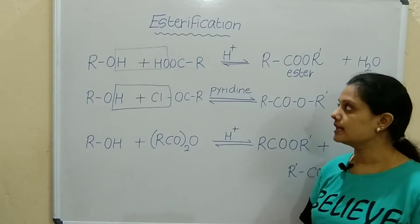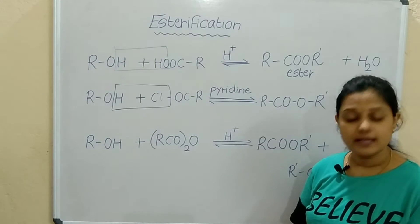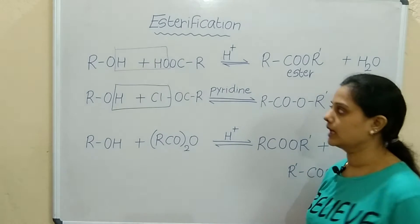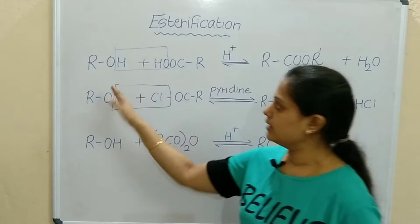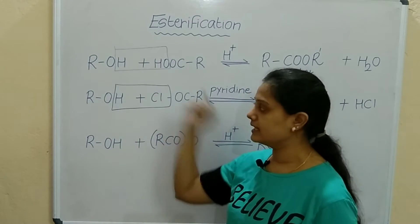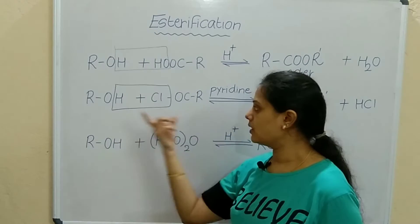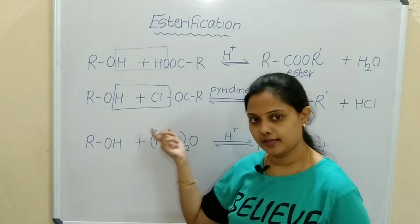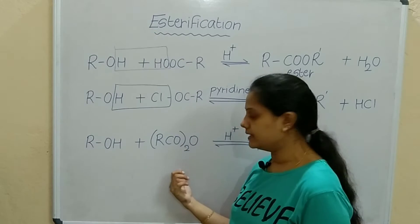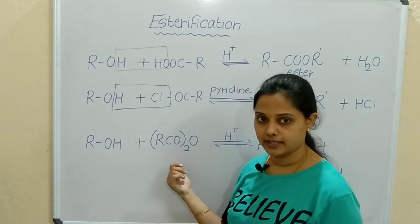The next two reactions are esterification where esters are formed. How is it formed from alcohol? We are taking here an acid example. Alcohols when treated with acyl chloride or acetic anhydride produce esters.